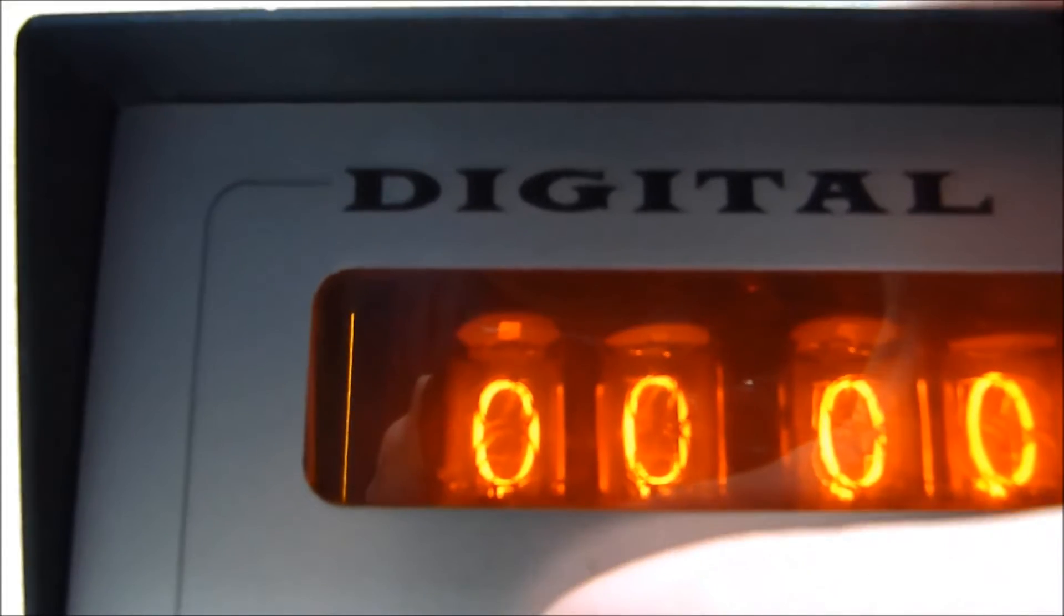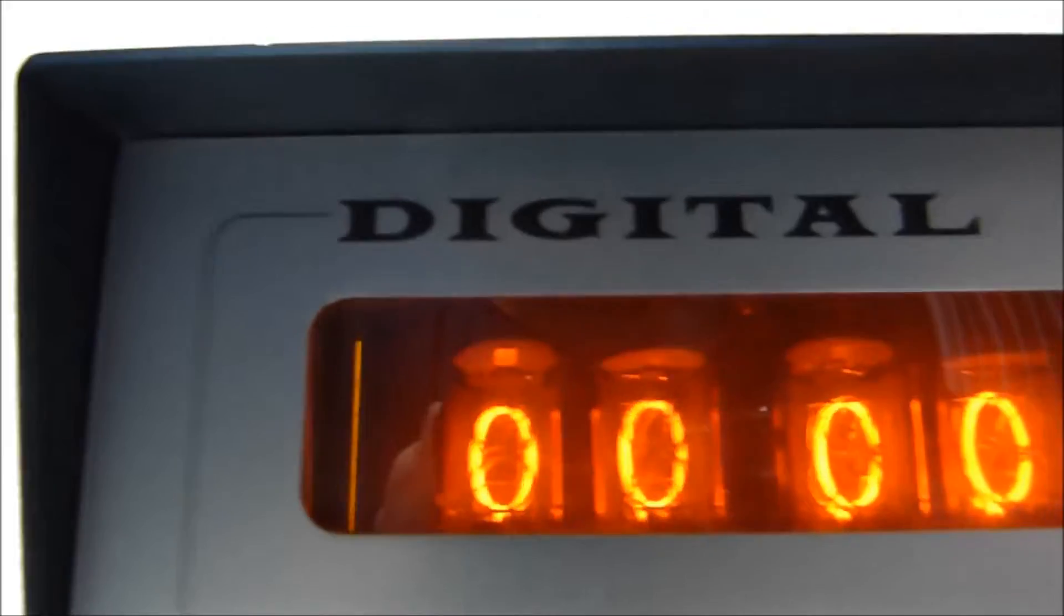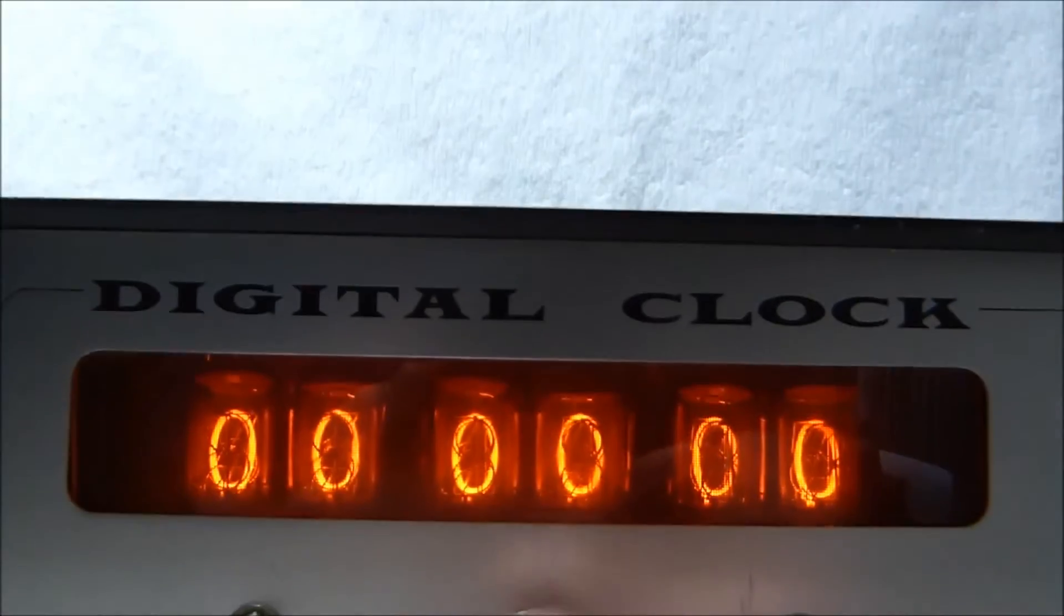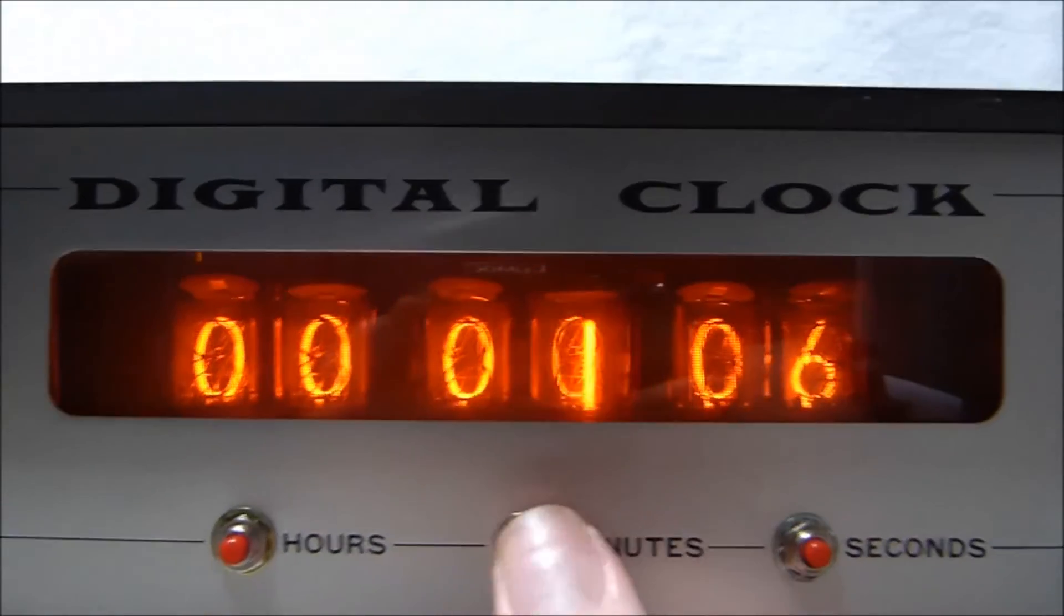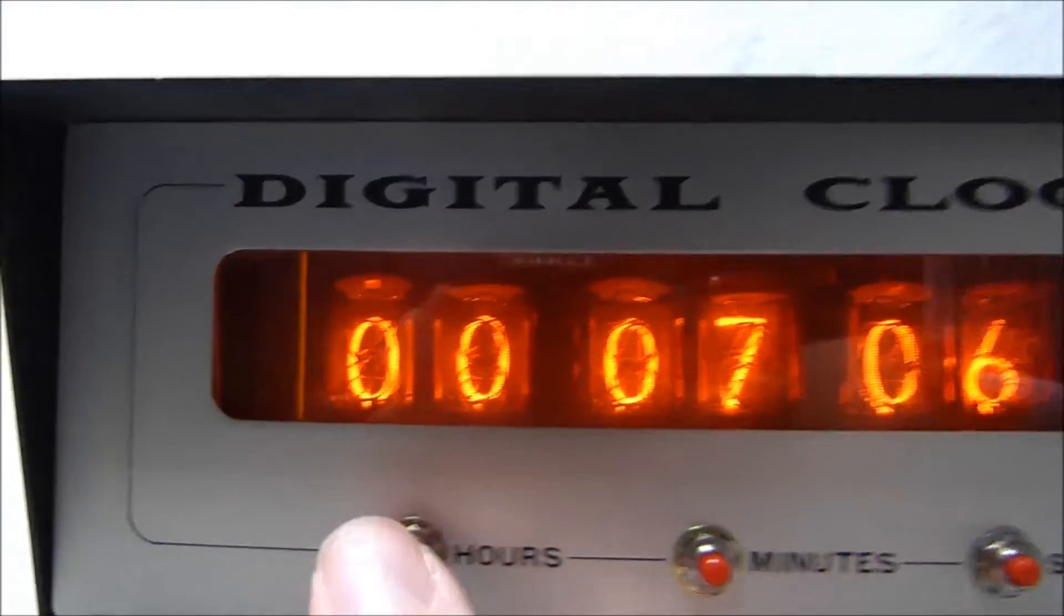Once you go from 23 to 0, it'll clear out all the other digits as you expect, so you definitely want to set your seconds and minutes first before you set your hours.